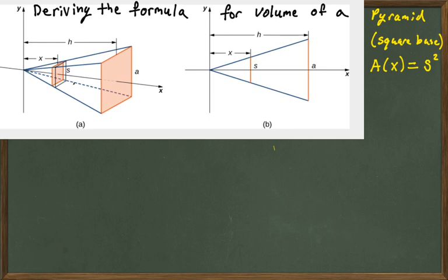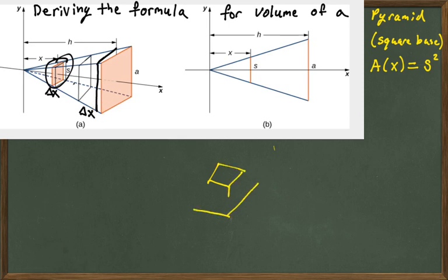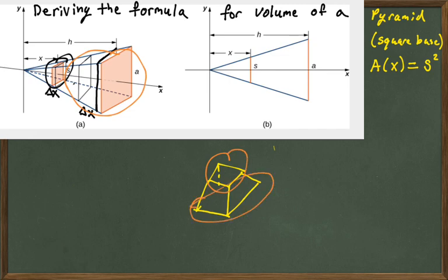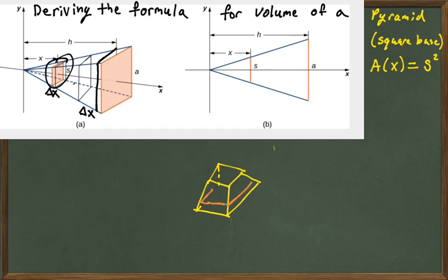We can think of it as a representative box, and here's a slightly larger representative box. Each has a height of delta x. We can continue this process making them smaller and smaller. Realistically, the top of any slice is going to be smaller than the bottom, so it's not quite a rectangular prism — we might call it a truncated pyramid. But when we let delta x go to zero, we get something more like a box, and we can find the volume as s times s times delta x.